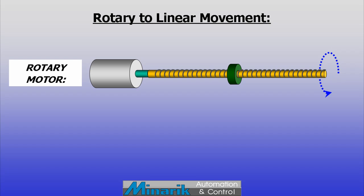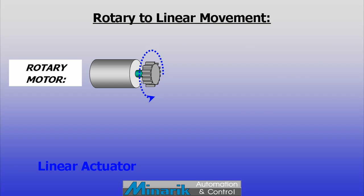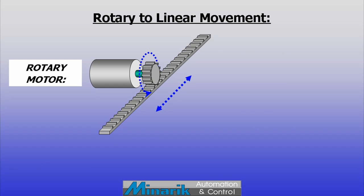Rotary motors can also turn a threaded shaft while the load is connected to a non-rotating nut. This is commonly known as a linear actuator. Rotating pinion gears can also drive against a toothed rack to achieve push and pull motion.